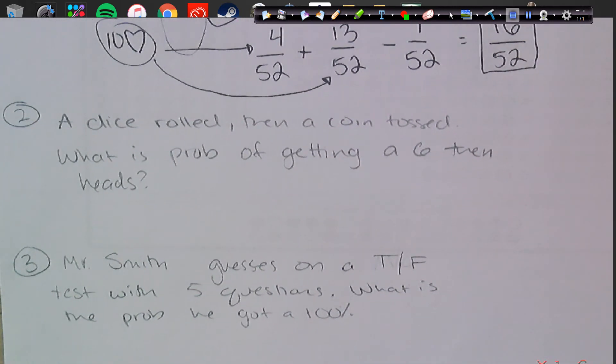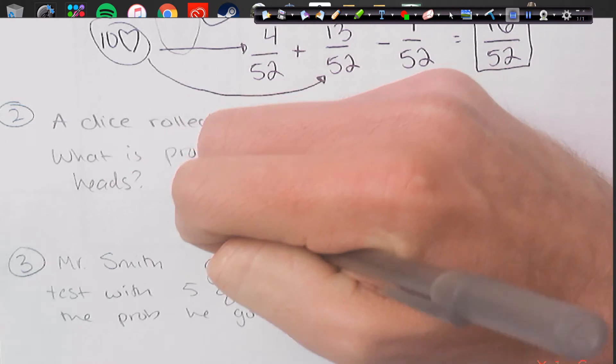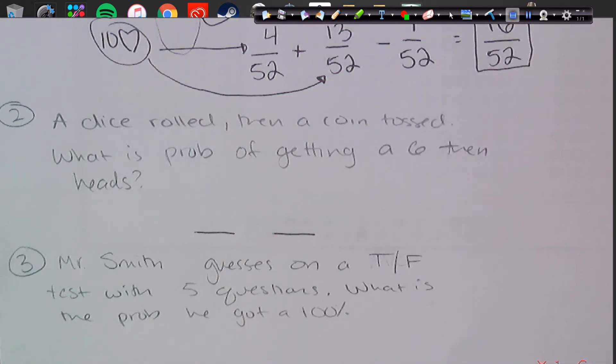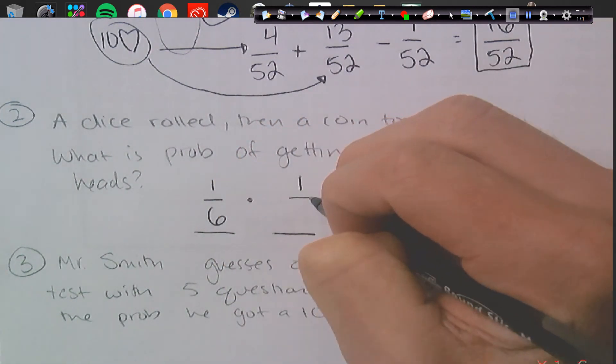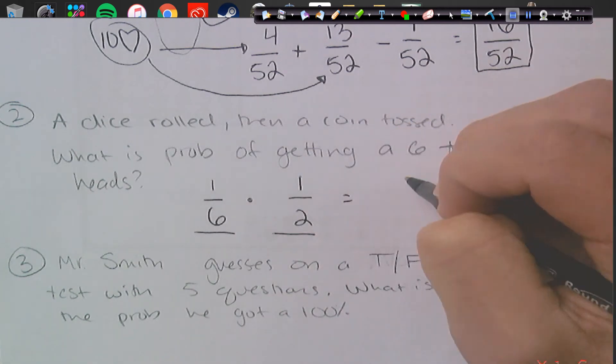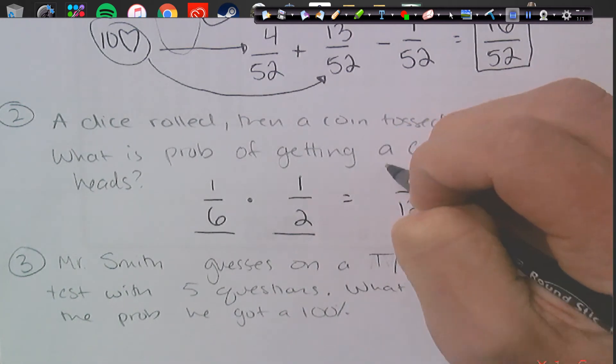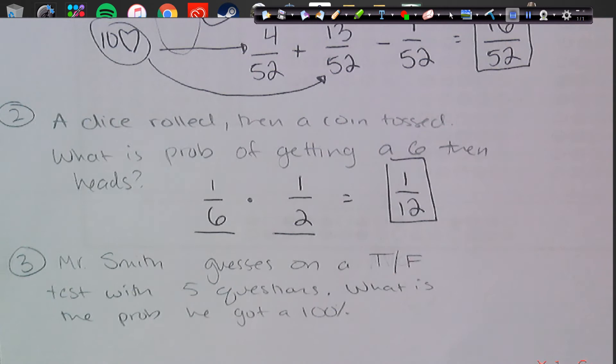Number 2, a dice is rolled, then a coin is tossed. What's the probability of getting a 6, then heads? Well, there's two events occurring, so I could give two spots. What's the probability of getting a 6? Well, that would be 1 out of 6 times the probability of getting a heads, 1 out of 2. Multiply those together, we get 1 out of 12. So this is a compound probability, and what we know is they're independent of one another, so it doesn't affect one or yet.